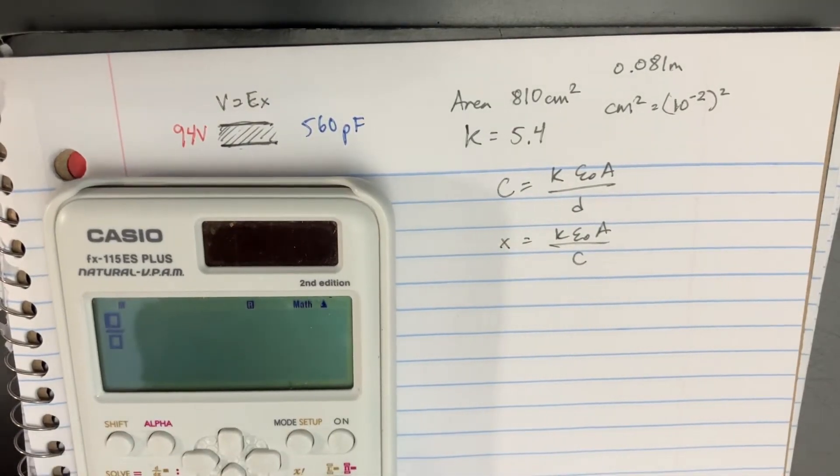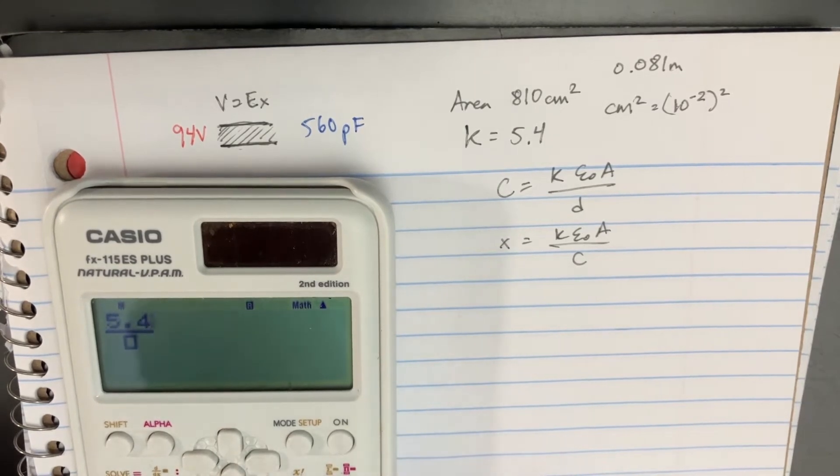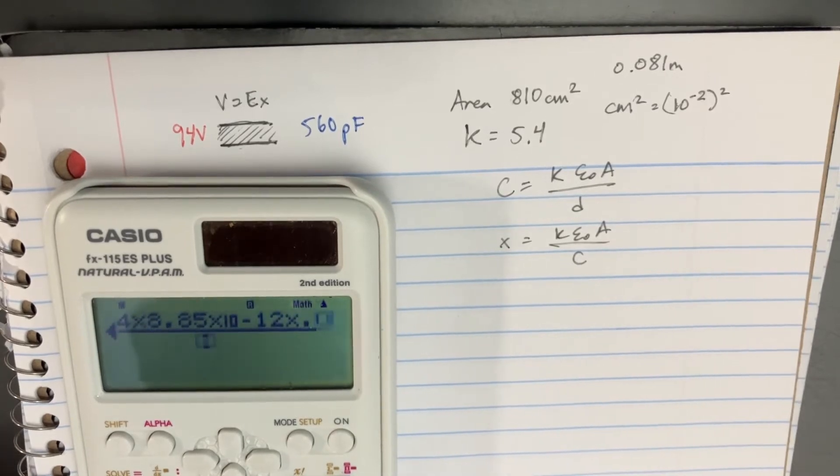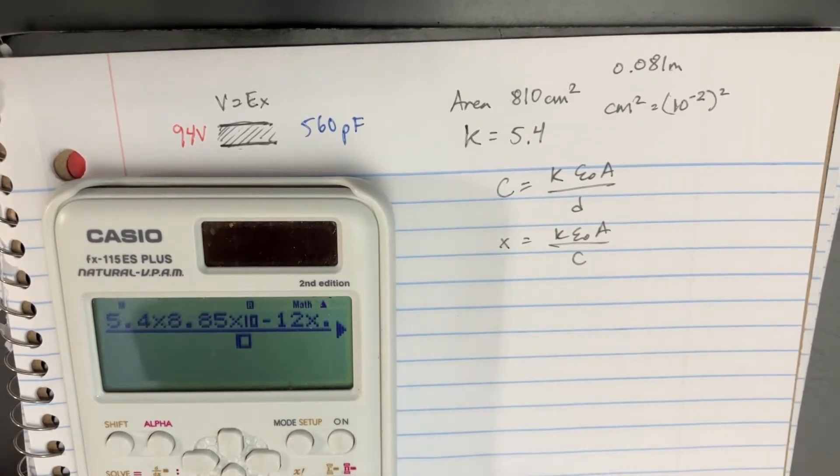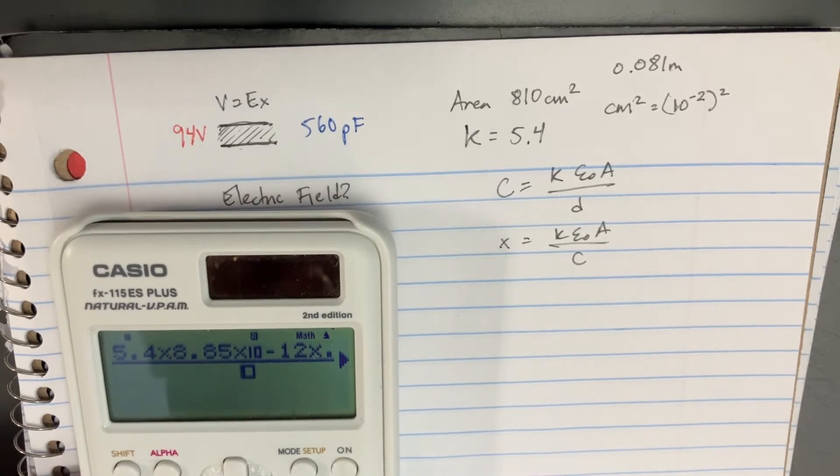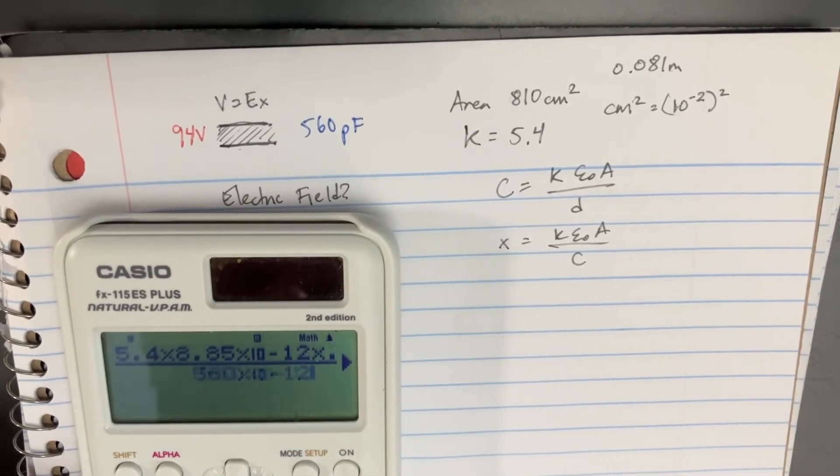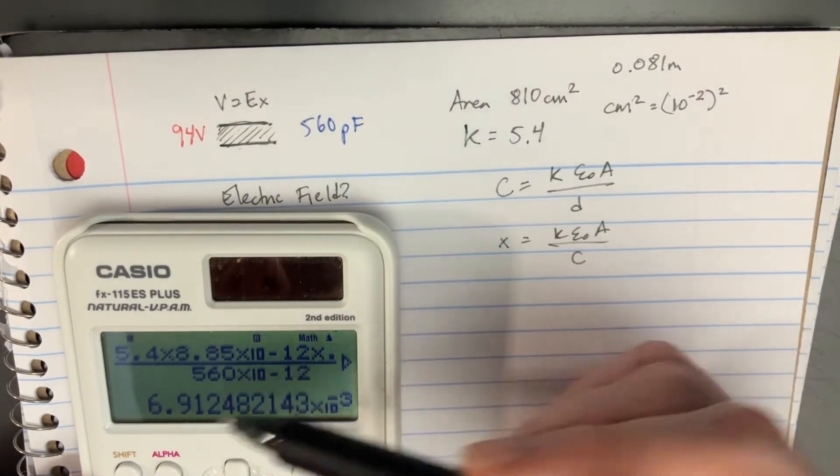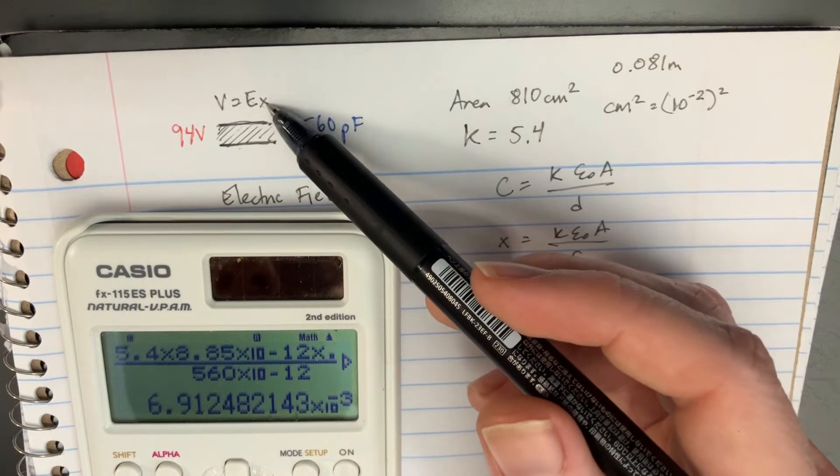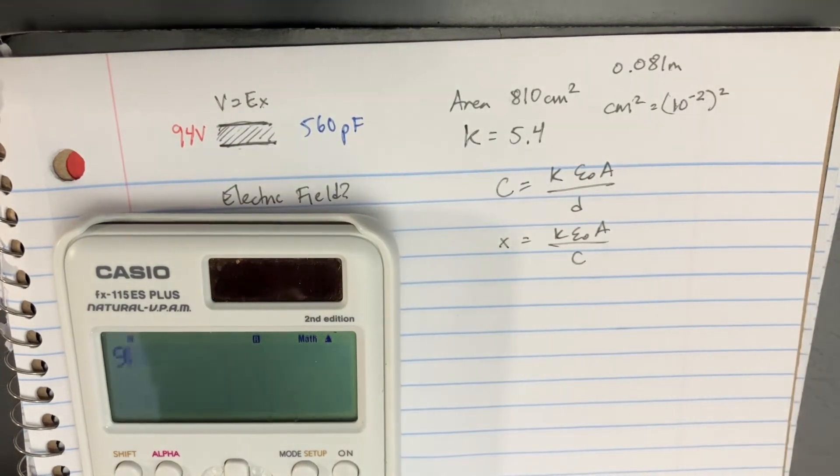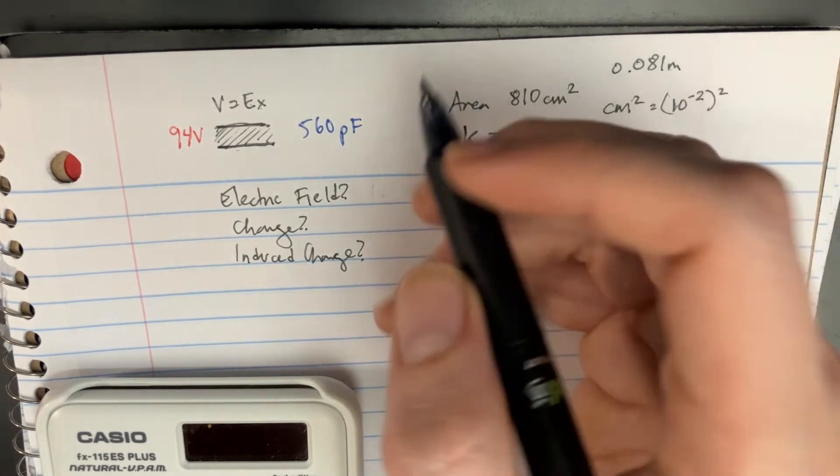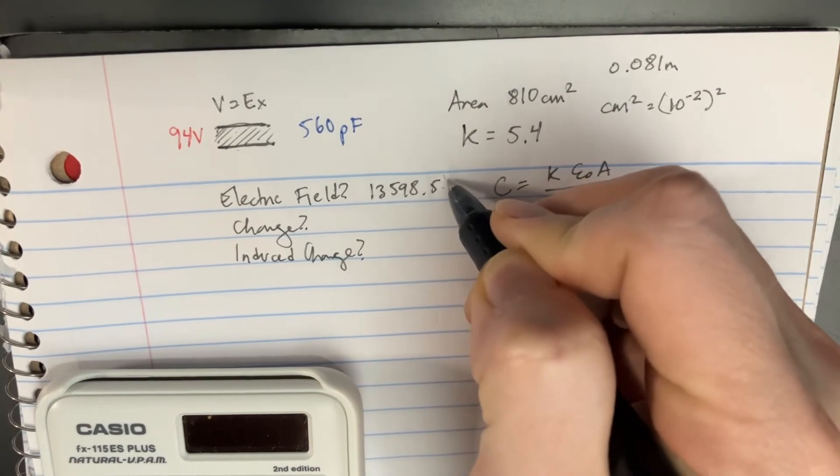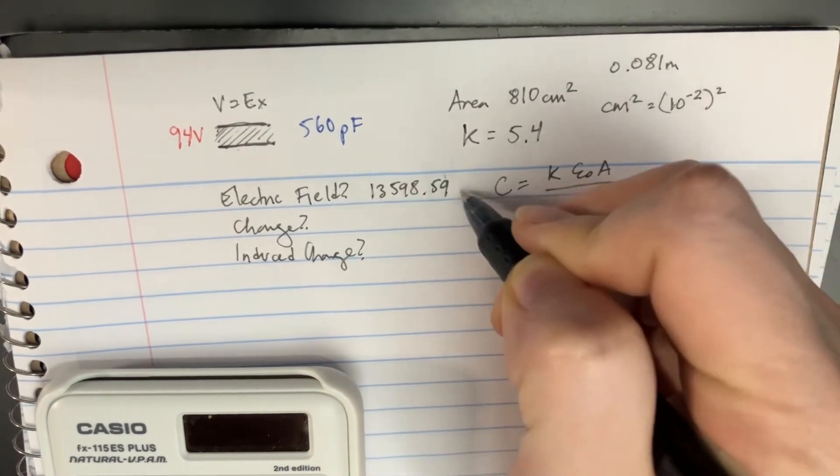So that's 5.4 times 8.85 times 10 to the negative 12 times 0.081, divided by C, which is 560 times 10 to the negative 12. That gives us the distance, and we can use that by dividing 94 by the distance. The electric field is 13,598.59 volts per meter.